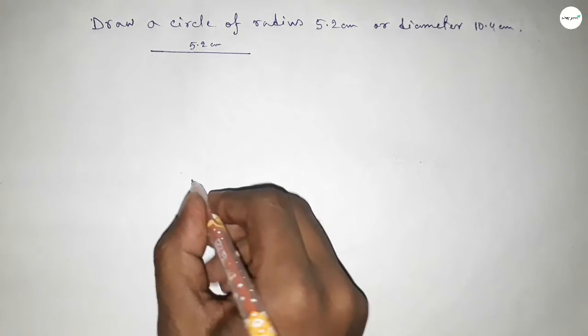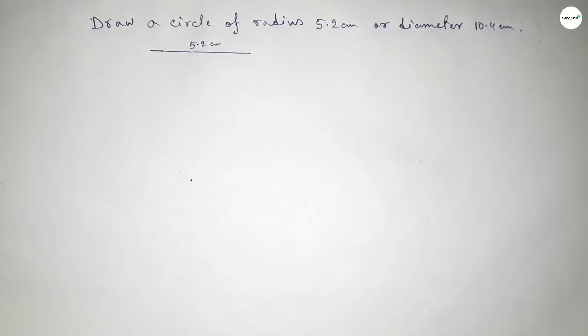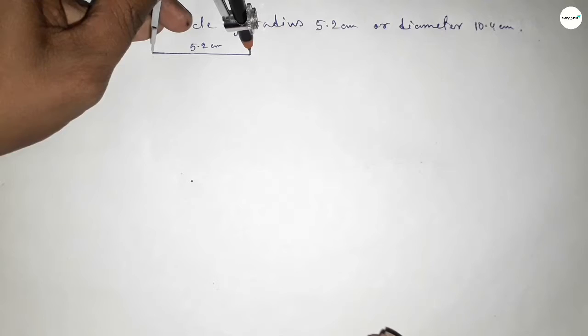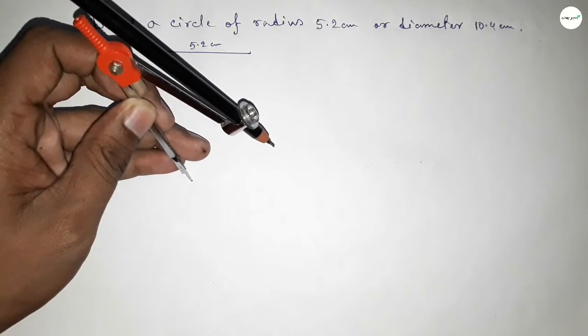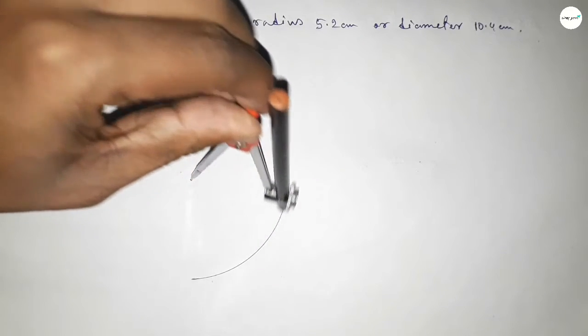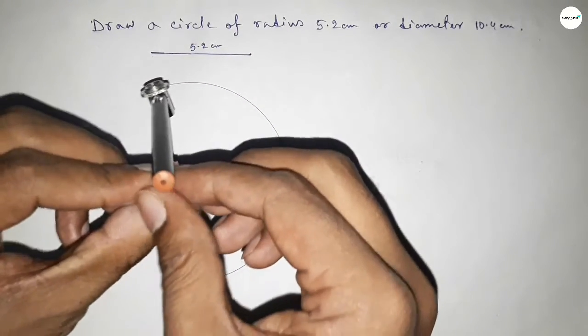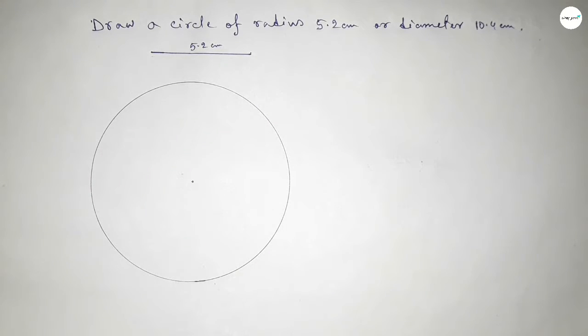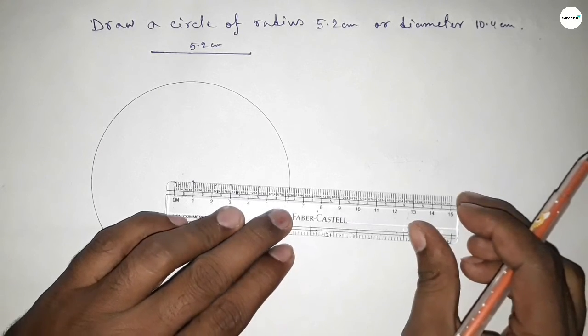Now taking a point and with the compass, taking the length 5.2 centimeters. Putting the compass here and drawing an arc by this way, which represents a circle.